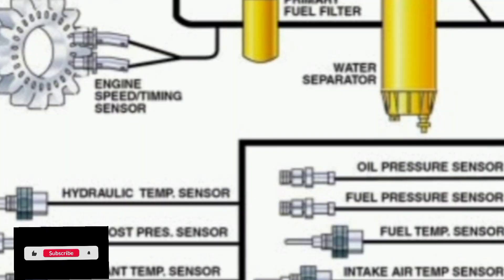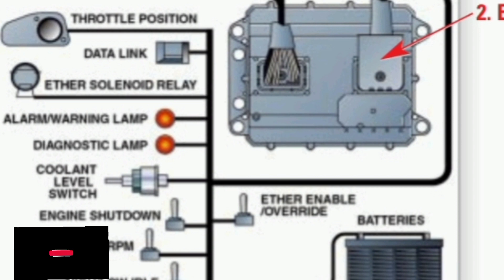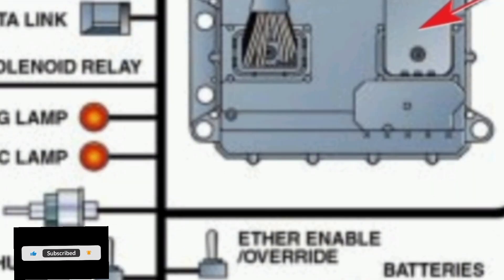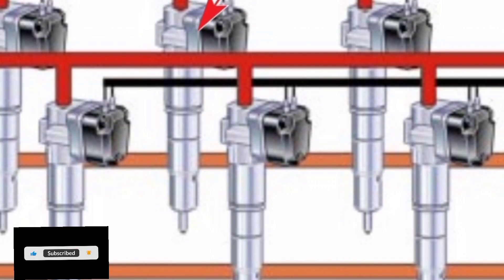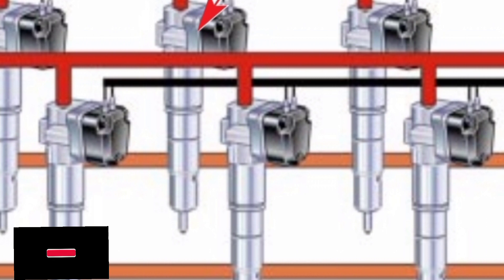The fuel system utilizes a hydraulically actuated electronically controlled unit injector. All fuel systems for diesel engines use a plunger and barrel in order to pump fuel under high pressure into the combustion chamber. The HEUI uses engine oil under high pressure in order to power the plunger, using engine lubrication oil pressurized from 6 MPa (875 PSI) to 28 MPa (4050 PSI) in order to pump fuel from the injector.